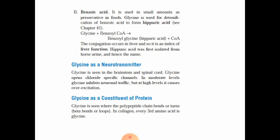Glycine also acts as an inhibitory neurotransmitter, seen in brain stems and spinal cords. Glycine opens chloride-specific channels; at moderate levels it inhibits neuronal traffic, but at high levels it causes over-excitation. Finally, glycine is a major constituent of proteins — in collagen, every third amino acid is a glycine, and it is found where the peptide bond bends to turn.